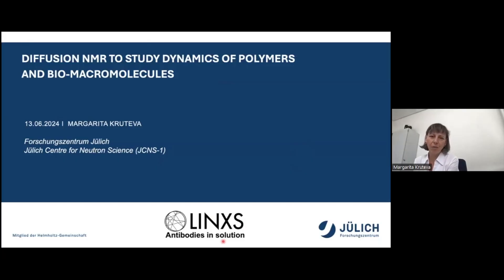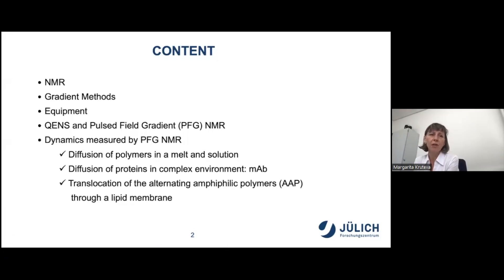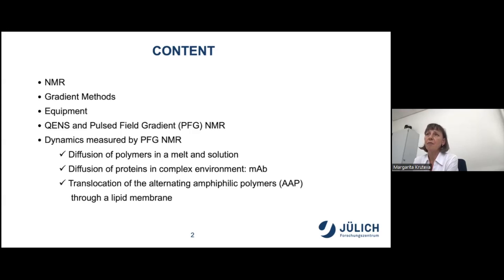Today I would like to talk about diffusion NMR and give a few examples of how diffusion NMR can be successfully combined with scattering methods. The content of my talk is: first I will explain what NMR is, then dwell on gradient methods, mention equipment, and tell you about the synergy of QENS and pulse field gradient NMR. I will present examples including diffusion of polymers in solution, diffusion of proteins in complex environments — in particular a monoclonal antibody study — and translocation of alternating polymers through lipid membranes.